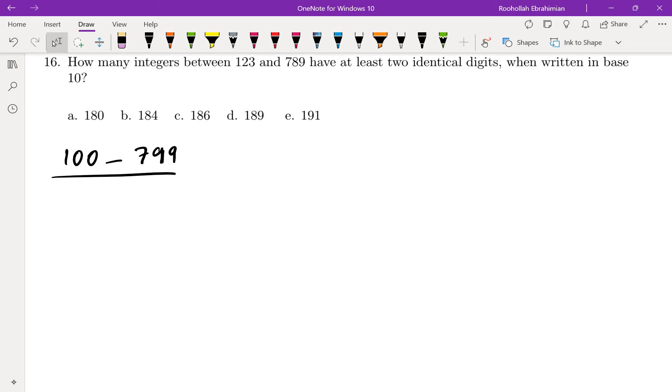Okay, so there are three types of integers that are in this range. I have two digits that are the same: either we have a a b, or we have a b a, or we have a b b. These are the three possibilities.